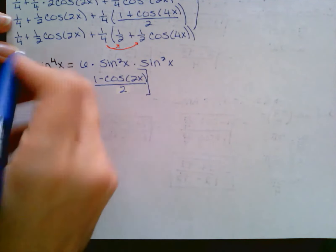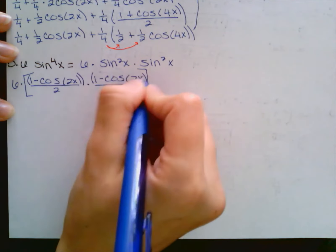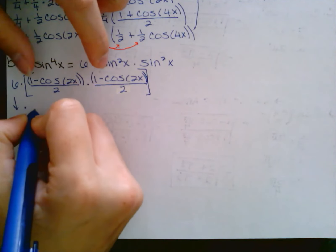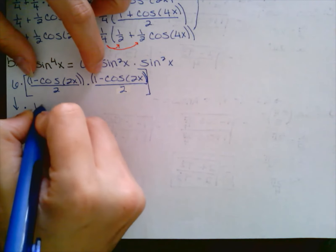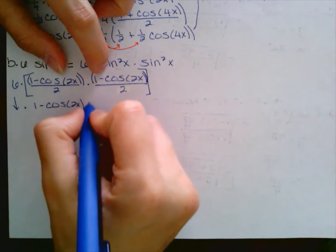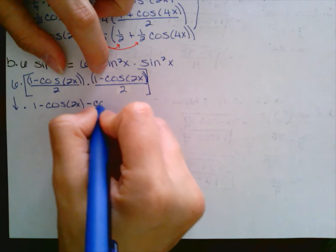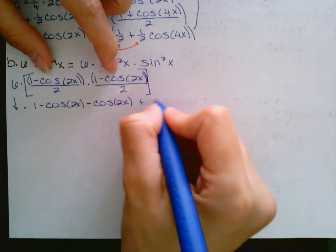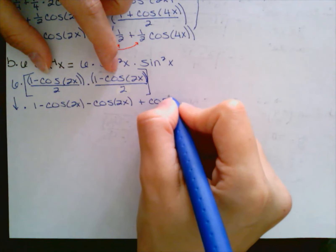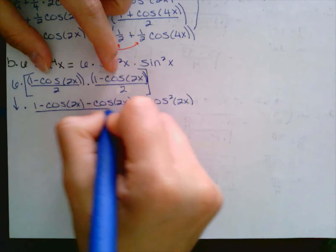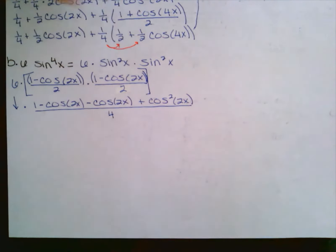I'm going to ignore the six for now and focus on cleaning this complicated portion. Just like last time, I'm going to FOIL the numerators. One times one is one, one times negative cosine of two x, then negative cosine of two x times one, and negative cosine two x times negative cosine two x gives a positive cosine squared of two x. All of this is divided by two over two, which is four.